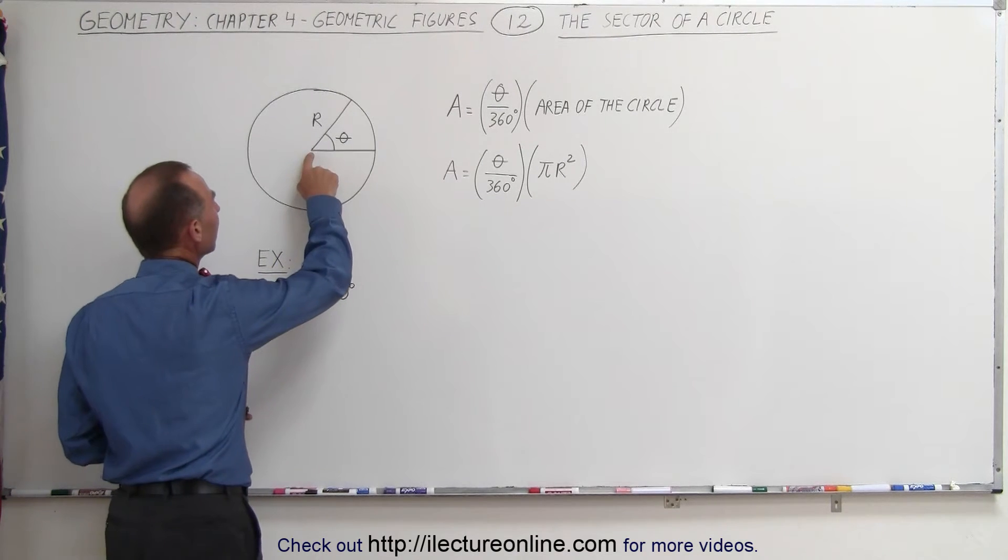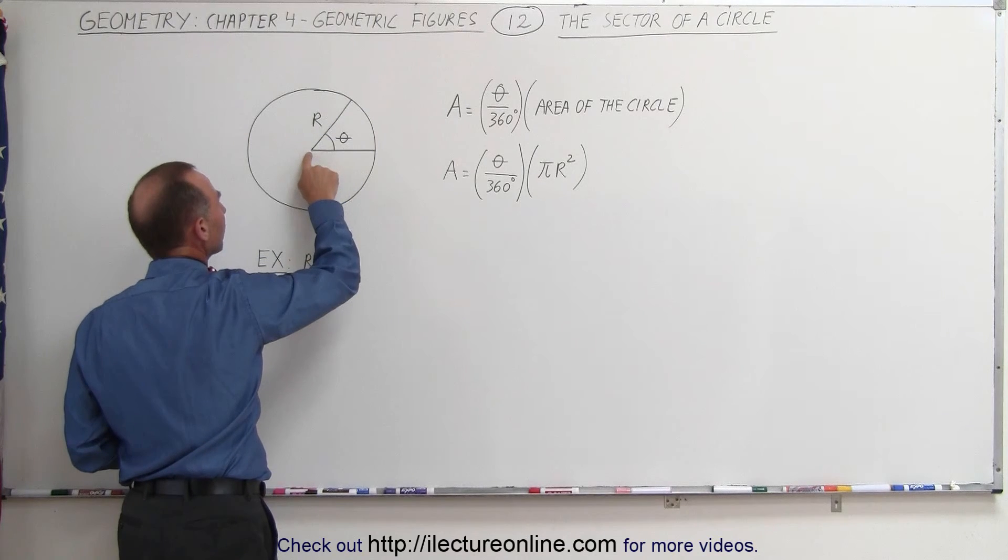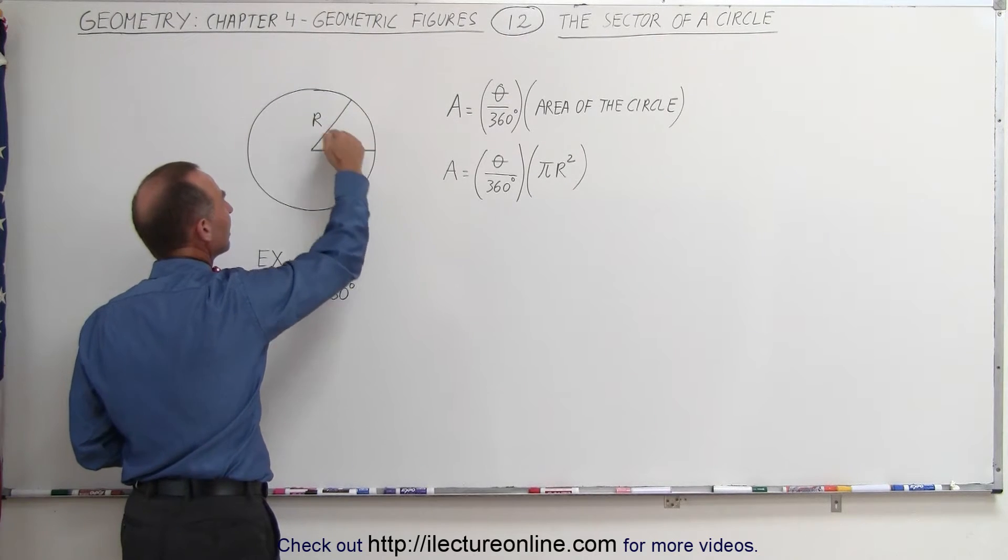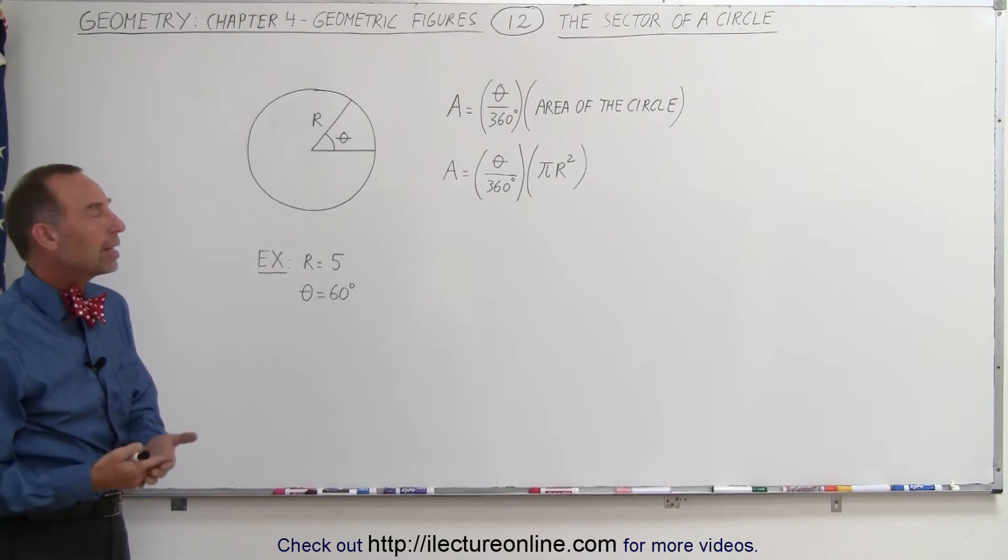If we find the center of the circle and then draw a radius from there to the edge of the circle, then draw another radius from the center to the edge, then we have an angle between those. Let's call that angle theta.